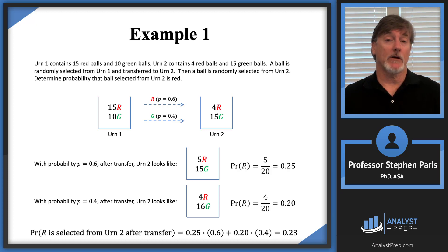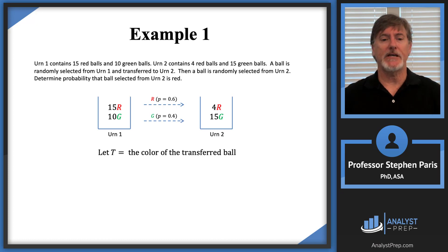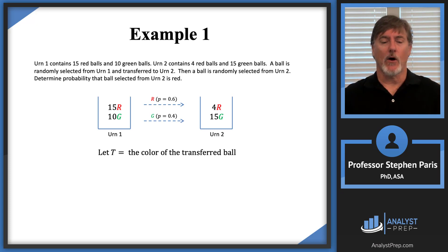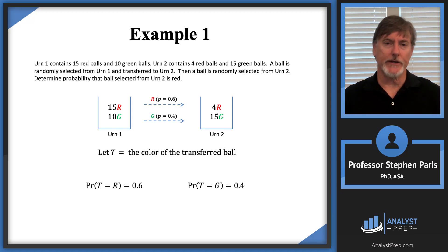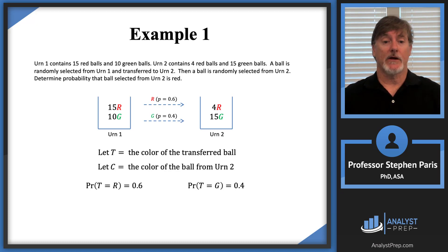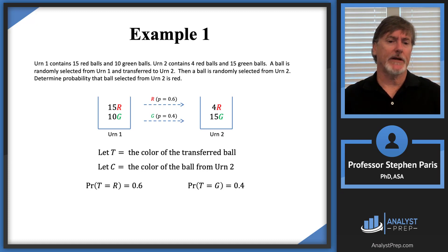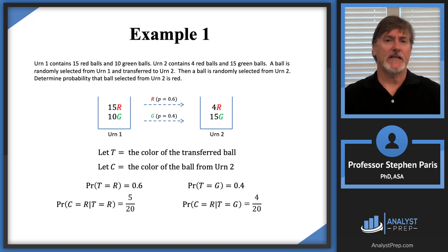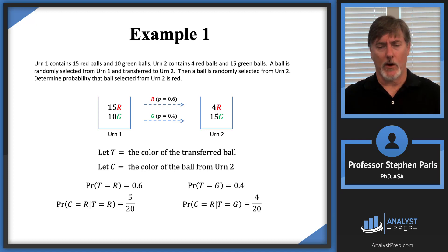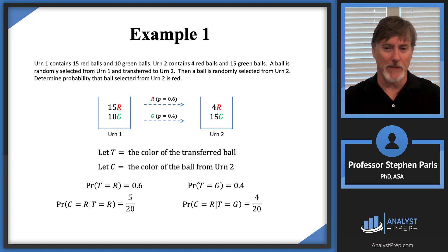Now let's add some mathematical notation. Define T to be the color of the transferred ball, so the probability that T is red is 0.6 and the probability that T is green is 0.4. Let C represent the color of the ball selected from urn 2. The conditional probability that C is red given T is red is 5 out of 20, and the probability that C is red given T is green is 4 out of 20. This is all what we did before — we're just putting mathematical symbols to it.